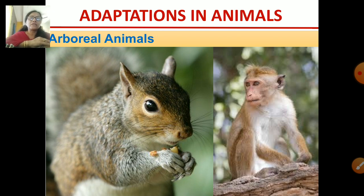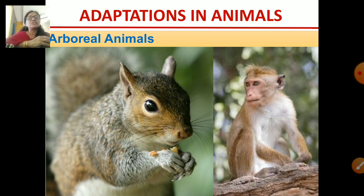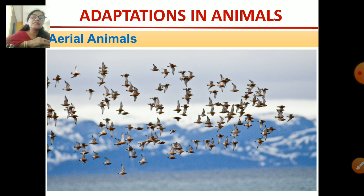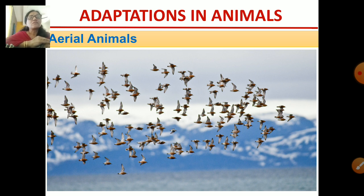These are the arboreal animals — animals which spend most of their time on trees. They have got strong arms and tail. Monkeys, for example, can swing with the help of their tail from tree to tree, climbing and jumping. They are called arboreal because they spend most of their time on trees. Aerial animals spend most of their time in the air flying. Birds are called aerial because most birds fly in the air — their body is covered with feathers, and their front legs are converted into wings.